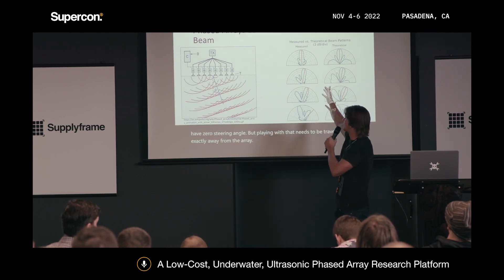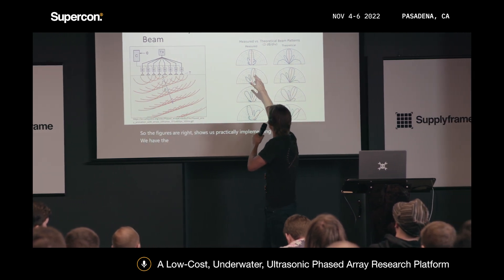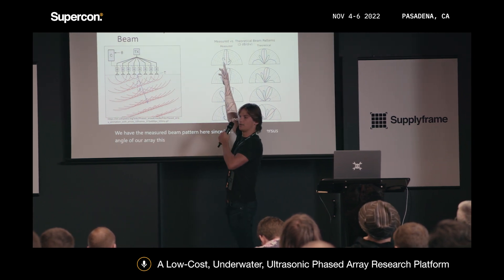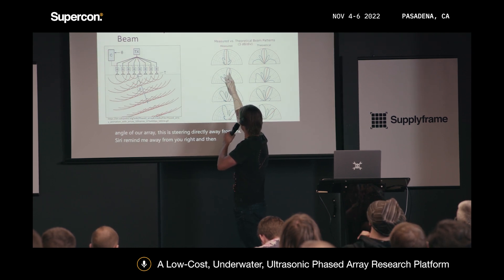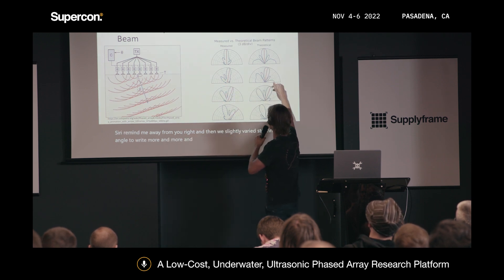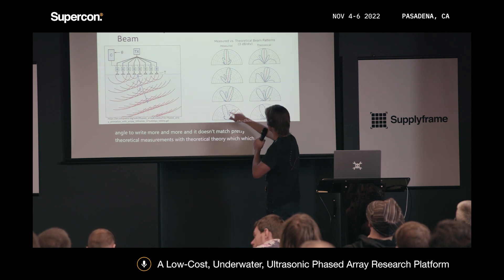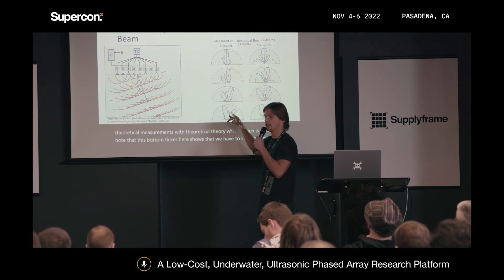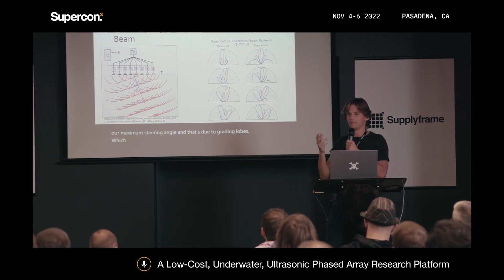The figure to the right shows the measured beam pattern — power versus angle of our array. We show steering directly away from the array, then gradually increasing the steering angle to the right. The measured pattern matches closely with theoretical predictions. The bottom figure shows that we must limit the maximum steering angle due to grating lobes, which arise from the physical spacing of the array elements.